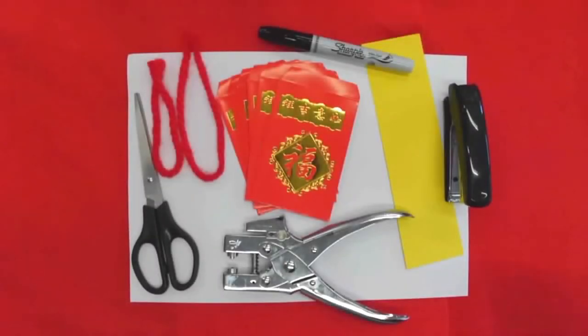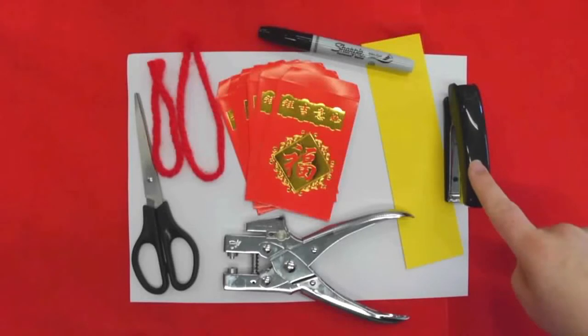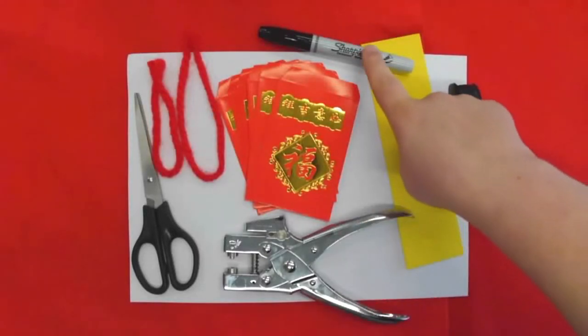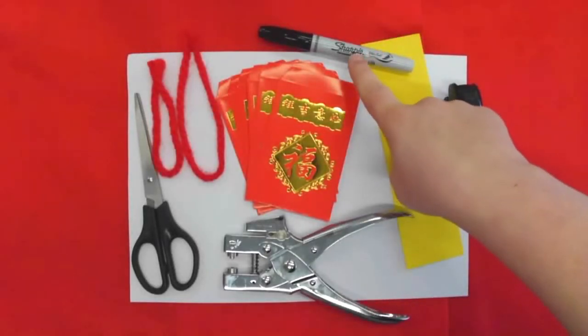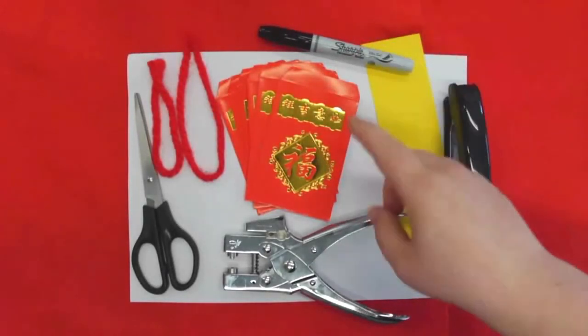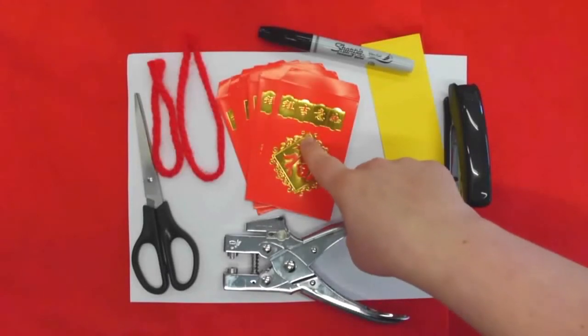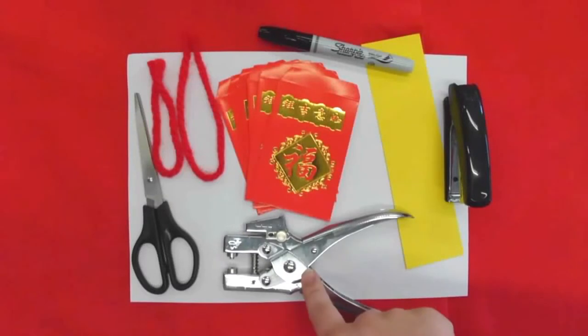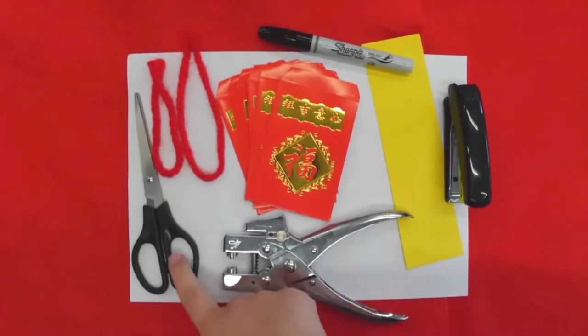Alright, for what you need today you need a stapler, a yellow strip of paper about five inches, you need a marker or paintbrush with ink, you need six lai see or red envelopes, you need a hole puncher, pair of scissors, and two pieces of yarn or string, twine, whatever you need.